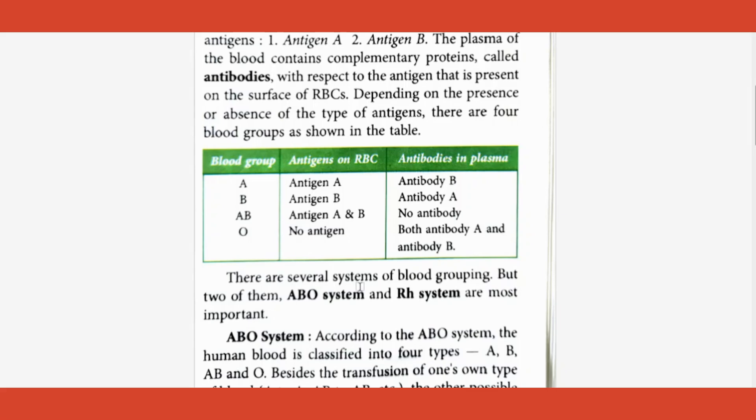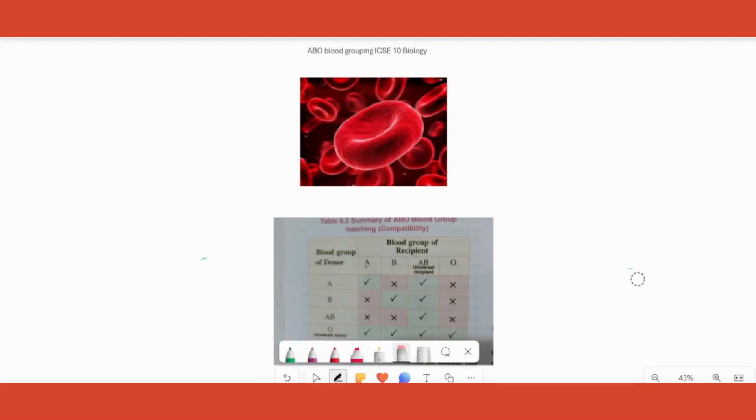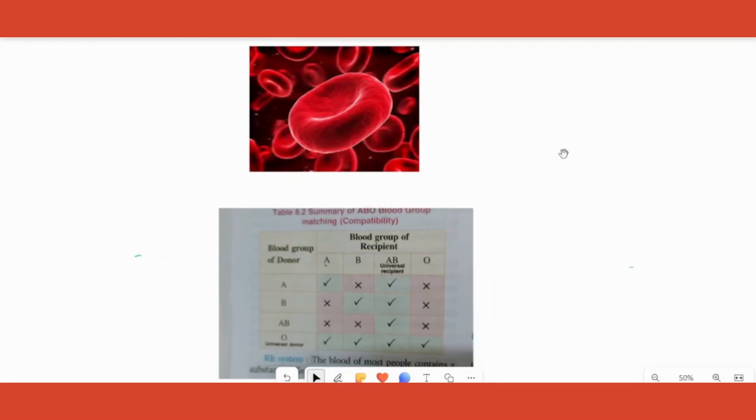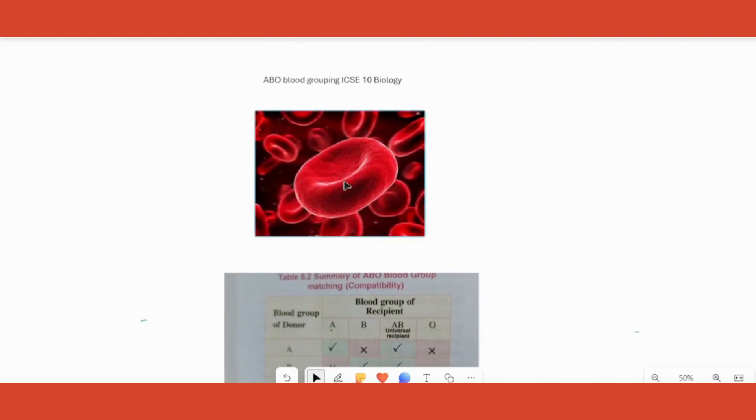To know why we call this as A or B or AB, you should understand certain things. Let's go to the board and learn that right now. First, you can see the structure of an RBC. On the RBC surface there are certain proteins called antigens. This antigen is not at all related to the immunity where you learn about antigen and antibody. This is not a foreign particle, this is a self particle present on the surface of the RBC.